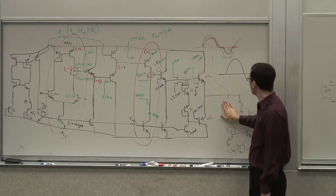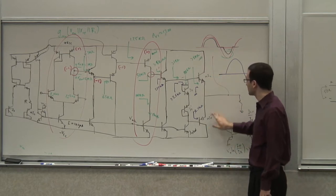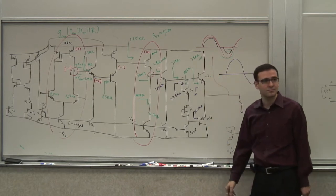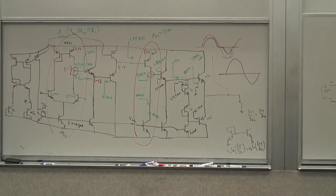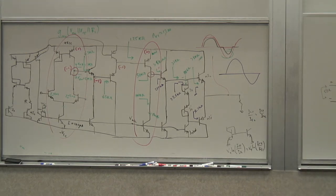So this op-amp is not going to protect itself. If you make this op-amp and start selling it, you will have a lot of customer returns. Why? Because customers may not be very careful, and when they're doing something with it, it may get shorted. As soon as it gets shorted, it blows up.